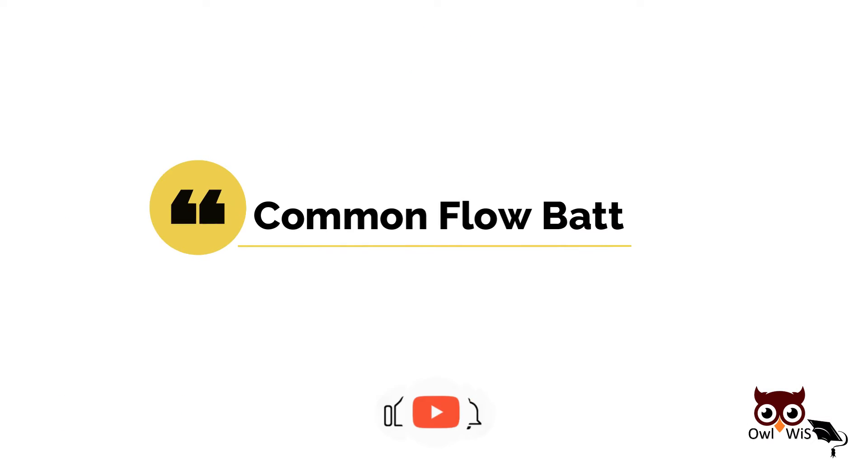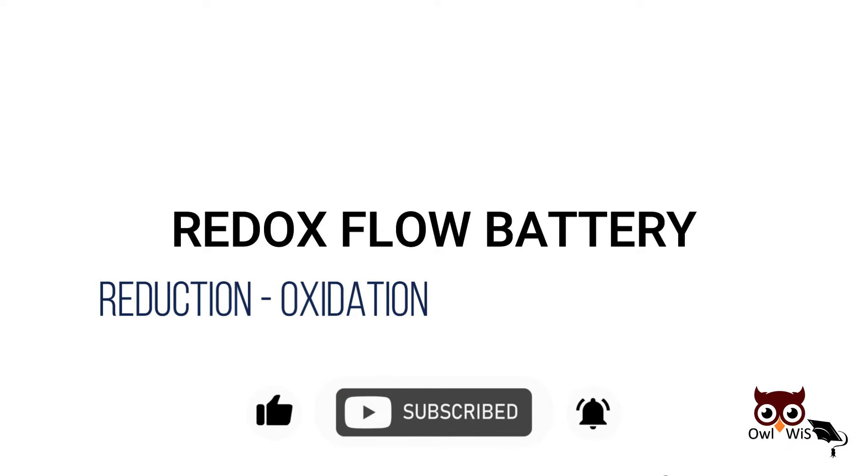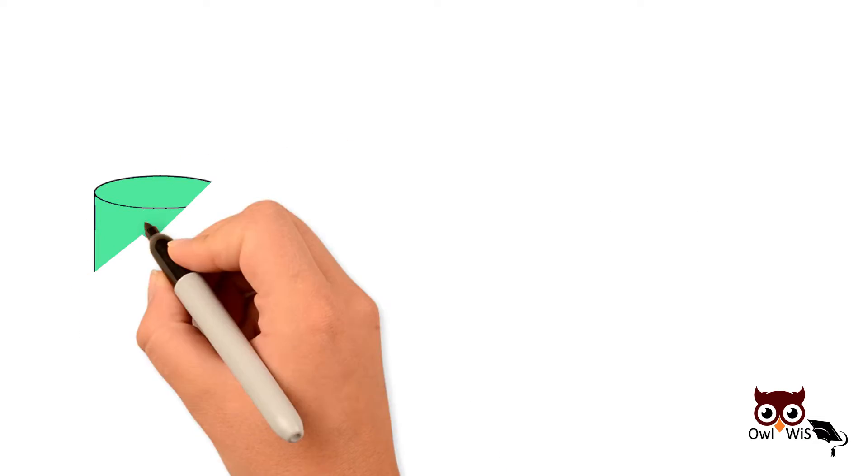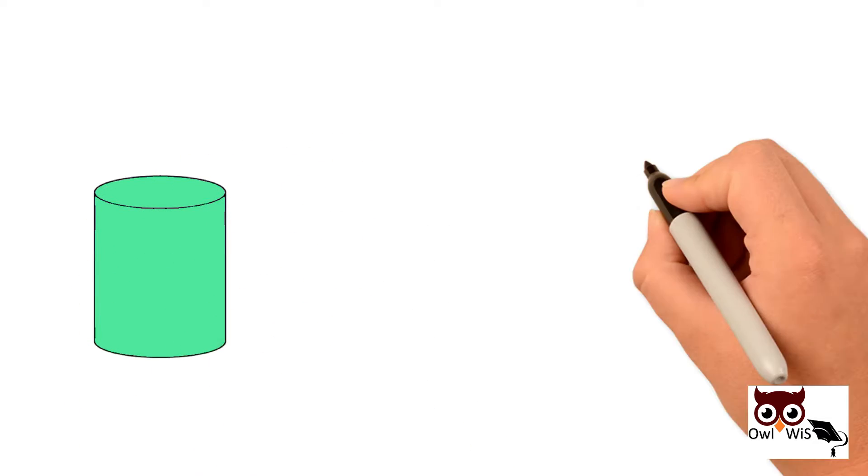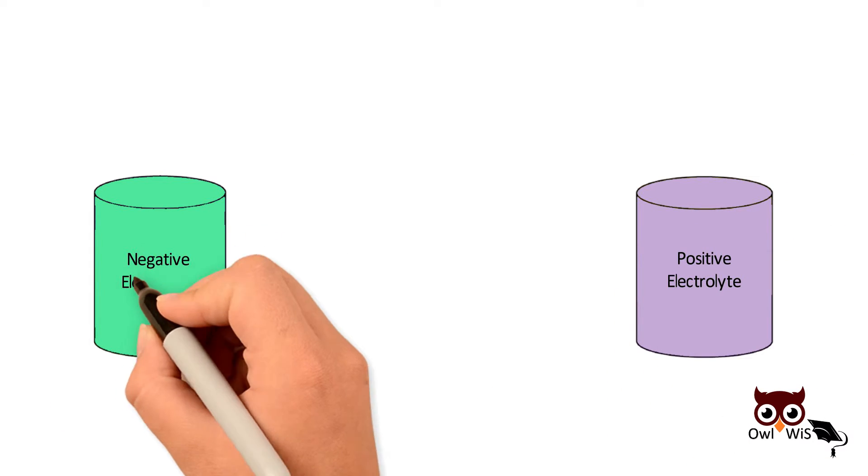The most common type of flow battery is the redox flow battery. They are based on the reduction oxidation reaction between the two electrolytes. Redox flow battery contains two large tanks that hold liquid electrolytes, one positive and the other negative.